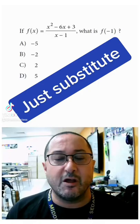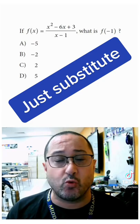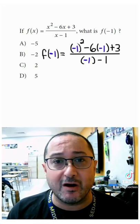If f of x equals x squared minus 6x plus 3, over x minus 1, what is f of negative 1? We can start by substituting negative 1 for x in the expression. Now we just need to work it out.